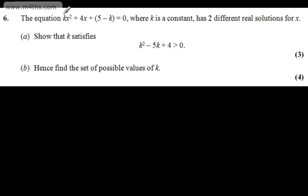This is question number 6. We're told the equation kx squared plus 4x plus 5 minus k equals 0, where k is a constant, has two different real solutions for x.